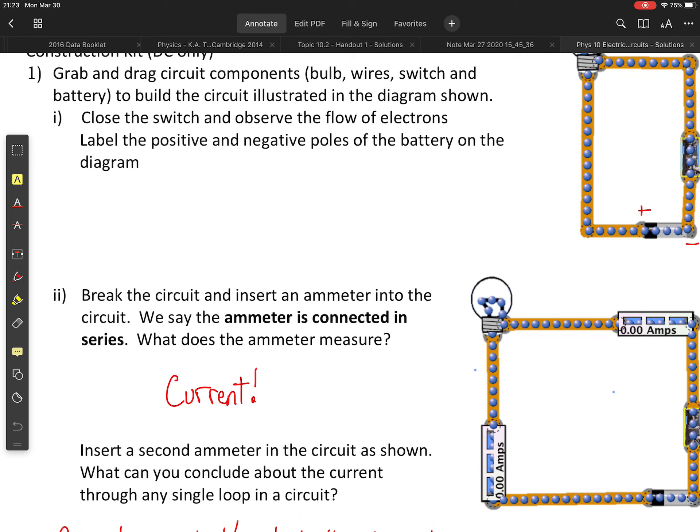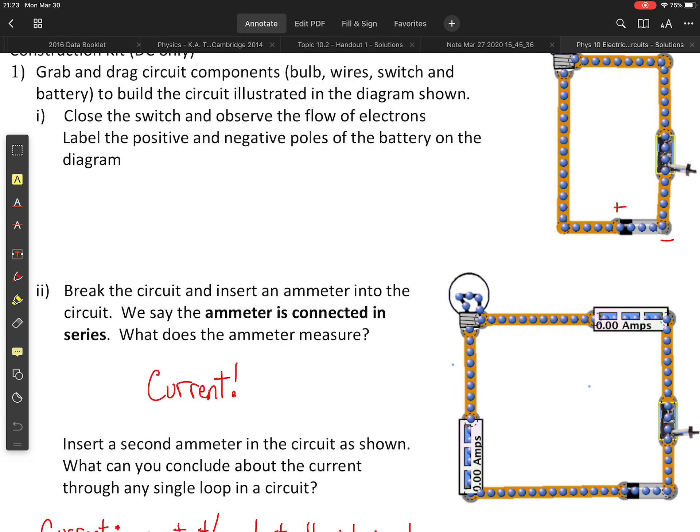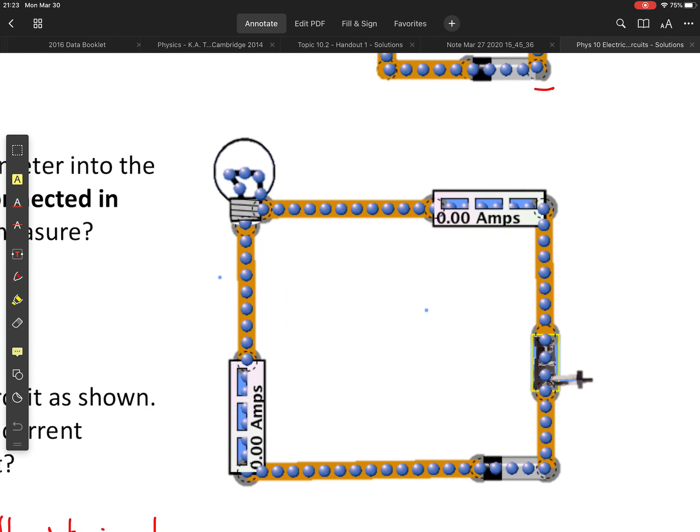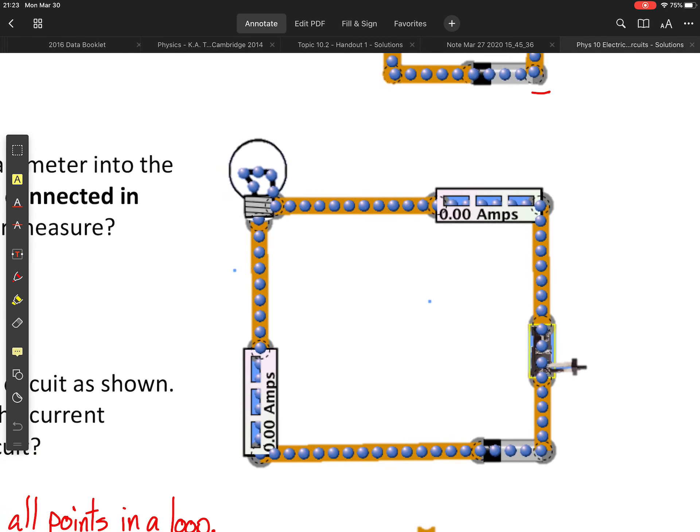So next, you are asked to break the circuit and insert an ammeter into the circuit. We say that it's connected in series. That means that it is in the loop that you are trying to measure. So both of these ammeters are inside a loop. So it's a square in this example, but we think of it in terms of a loop or a circle. Circuit and circle sound kind of similar, you might have noticed.